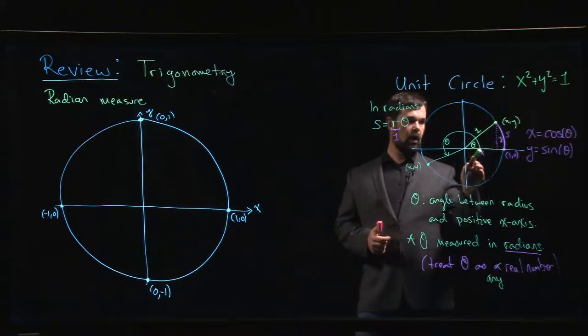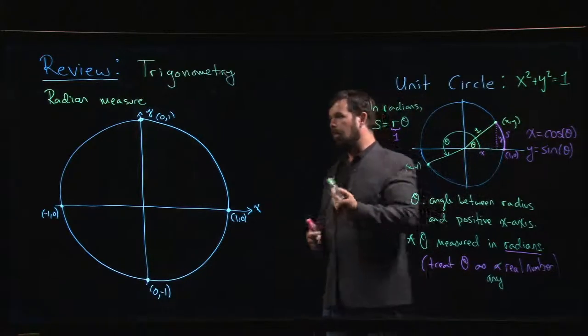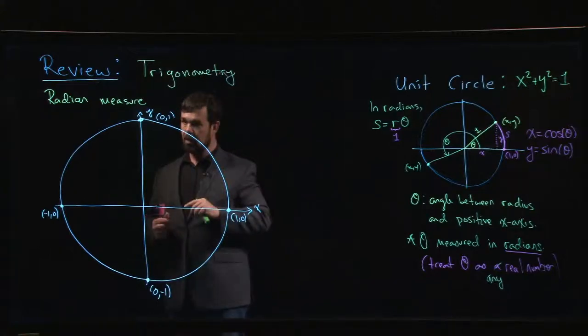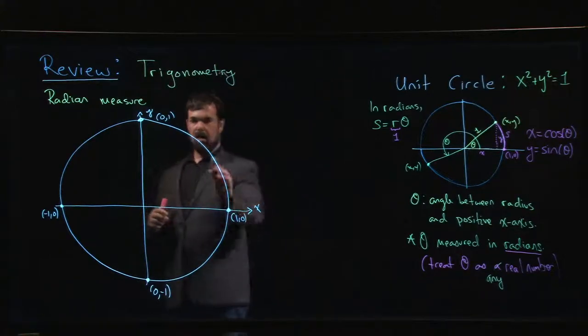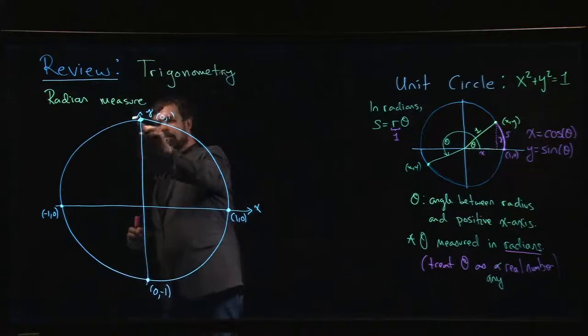of a circle is just the angle that is spanned by that sector times the radius. And since we're working with the radius of 1, that means that a given length, a given segment of the circle, is just equal to the angle that's spanned.